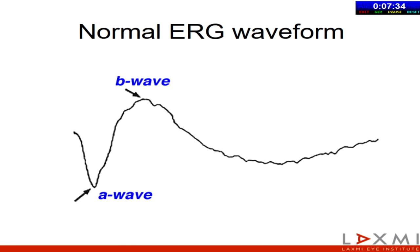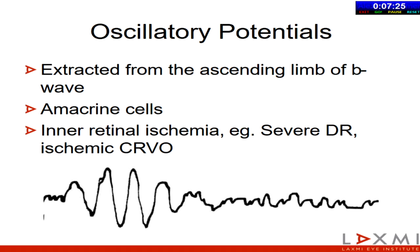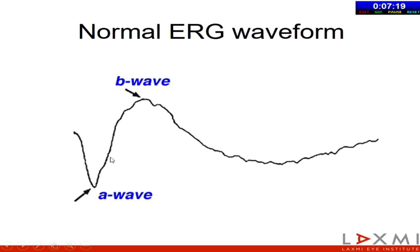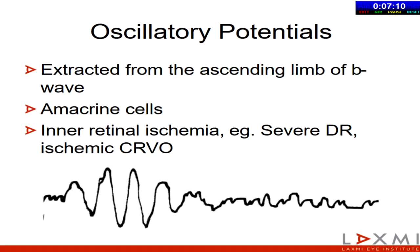The A and B waves are the most important two waves in ERG interpretation. There's another series of waves called oscillatory potentials. If you amplify the ascending limb of the B wave, you will find little wavelets called OPs or oscillatory potentials — these are thought to be due to the amacrine cells. They are sensitive for inner retinal ischemia and are found to be abnormal in conditions like severe diabetic retinopathy and ischemic CRVO.